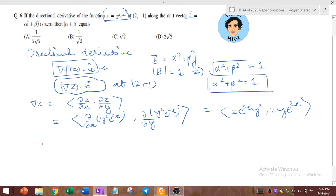So the gradient of z dot b now becomes simply the dot product 2 e to the power 2x y square comma 2y e to the power 2x times b. Components of b is alpha comma beta. So this becomes 2 alpha e to the power 2x y square plus 2 beta y e to the power 2x.